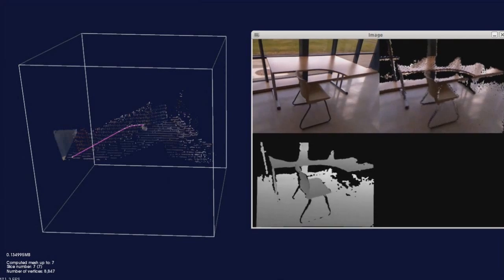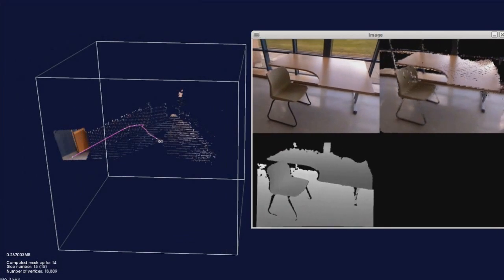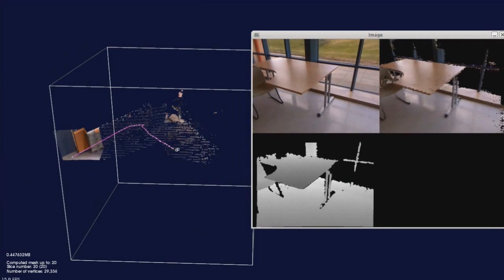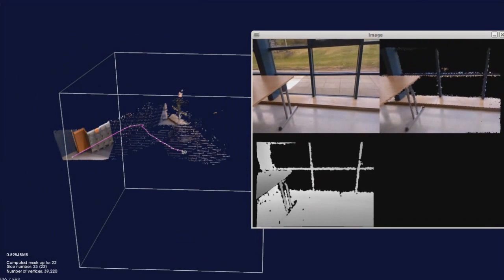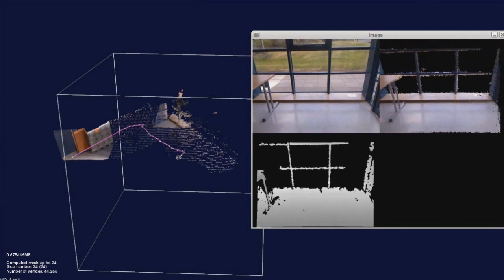In order to build a complete model of the environment, each time the volume is moved we extract a point cloud of the surfaces in the region that is leaving the volume. We refer to these point clouds as cloud slices.